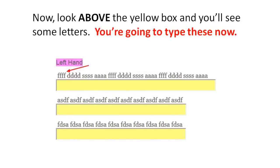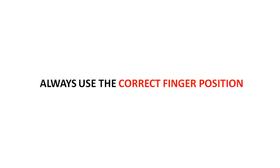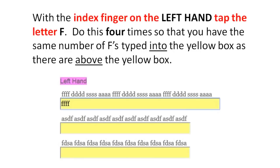Now look above the yellow box and you'll see some letters — you're going to type these now. Keep your fingers resting on the home keys and copy the text from above each exercise box by tapping the same key on your keyboard. Always use the correct finger position. With the index finger on the left hand, tap the letter F four times so that you have the same number of F's typed into the yellow box as there are above it.